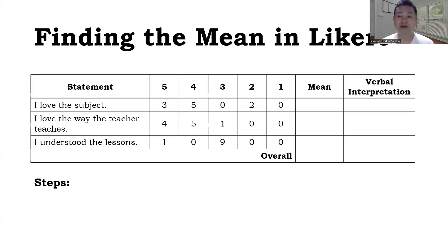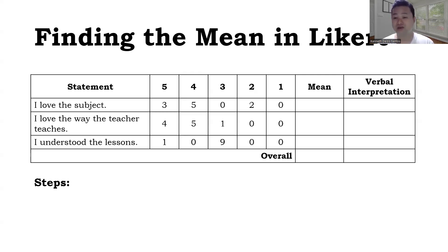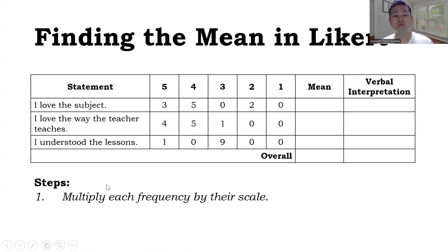I would like to note that the mean in Likert scale is not similar to the mean of an average data set. In average data, all you have to do is add all of the data and divide by the number of data sets. For example, mathematics is 90, science is 85, English is 75 — you add all three and divide by three. But in Likert scale, it's not the same. The first step is to multiply each frequency by their scale.